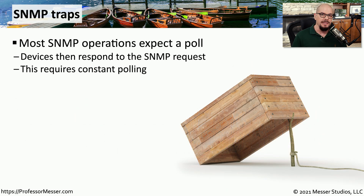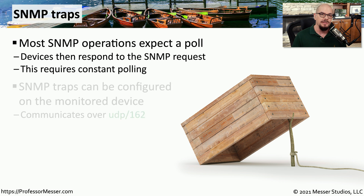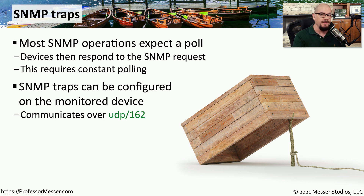So far, we've described this SNMP process as very proactive, which means we have to query the device, it responds back with a value, and then we would need to perform trending of that value over time. This obviously means that we would need to constantly perform polling to that device to collect and trend that information. And if you have tens, hundreds, or thousands of devices, you may find it increasingly difficult to perform all of these polls. Instead, we could configure the remote device to perform its own monitoring, and when it exceeds a particular value, to send an alert message directly to us instead of us having to constantly poll.